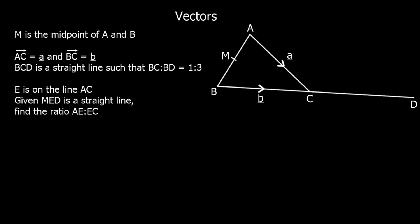Here's another question. We've got triangle ABC. The line BC is extended to D. M is the midpoint of A and B, so M is halfway between A and B. Let's work out A to B straight away — with these questions we can always start by working out what we can do easily. A to B: to get from A to B we go A to C then C to B, so A to B equals a minus b.